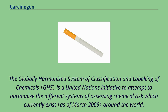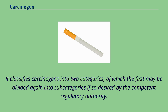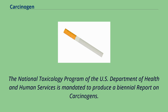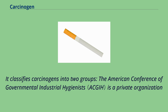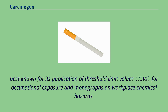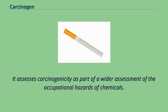The Globally Harmonized System of Classification and Labeling of Chemicals is a United Nations initiative to harmonize the different systems of assessing chemical risk which currently exist around the world. It classifies carcinogens into two categories, of which the first may be divided into subcategories by the competent regulatory authority. The National Toxicology Program of the U.S. Department of Health and Human Services is mandated to produce a biennial report on carcinogens. The American Conference of Governmental Industrial Hygienists is a private organization best known for its publication of threshold limit values for occupational exposure and monographs on workplace chemical hazards, and it assesses carcinogenicity as part of a wider assessment of the occupational hazards of chemicals.